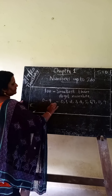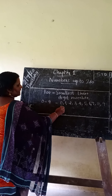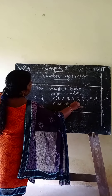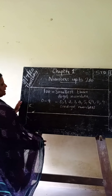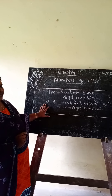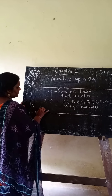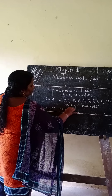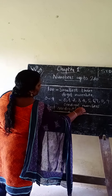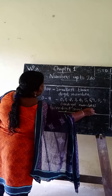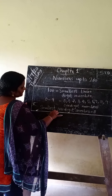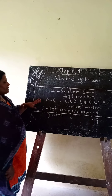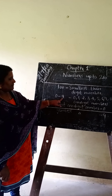0 to 9 are 1-digit numbers. The smallest 1-digit number is 0. The greatest 1-digit number is 9.